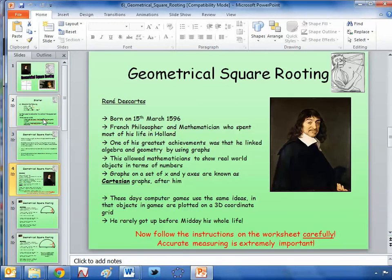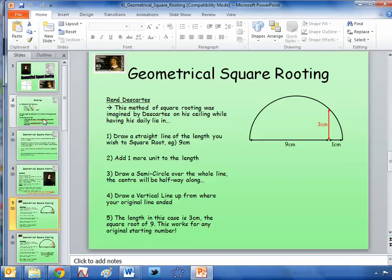But then it takes you through a bit of history and then it takes you through this method. So say you want to estimate the square root of nine. Obviously we know what the square root of nine is, but that's a good one to start with because it can check whether this method's working. So you draw a length nine centimetres long, and I use this on centimetre square paper with the students and it worked really well. And you mark the end of that line with a little X or a dot or something.